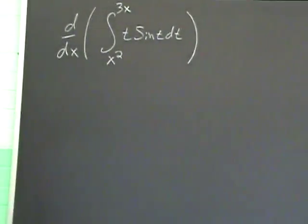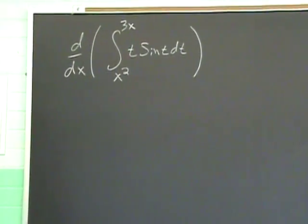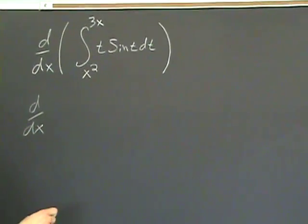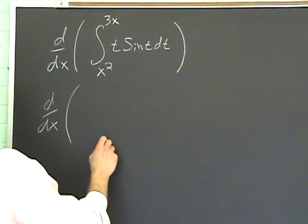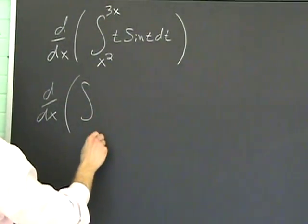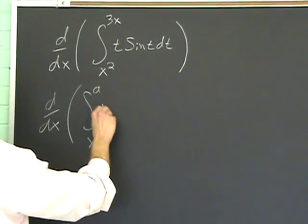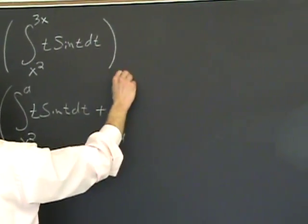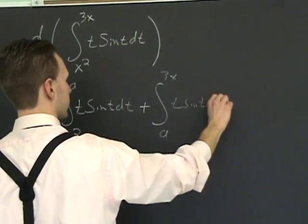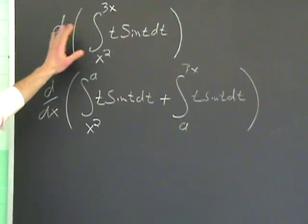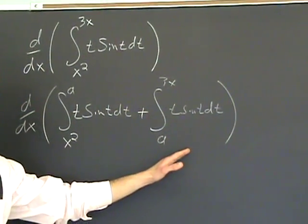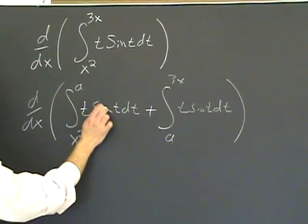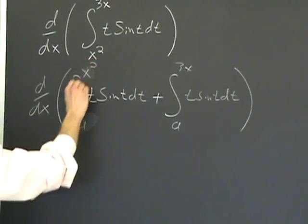I guess the last one, pretty much about as complicated as it gets, is that both the upper and lower bounds are functions. In this case, you could rewrite it using properties of integrals. You could break this up judiciously and say that this integral could be, say, the integral from x squared to any constant of t sine t dt plus the integral from that same constant to 3x of t sine t dt. So, now, you see this as the sum of two separate integrals, which we know how to handle because we just did the examples. What's going to happen here is, we have to switch the boundaries. So, that's going to be from a to x squared, and that's going to change it to the sine.